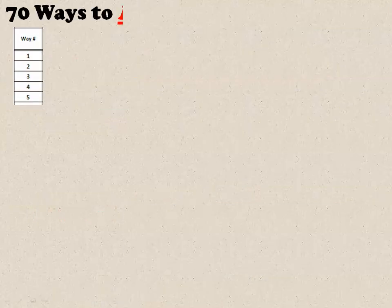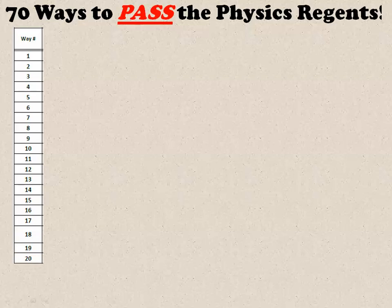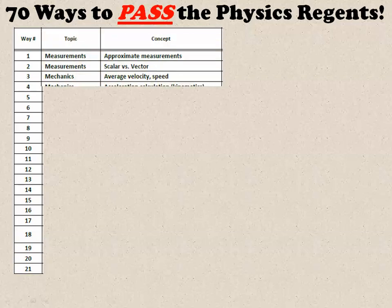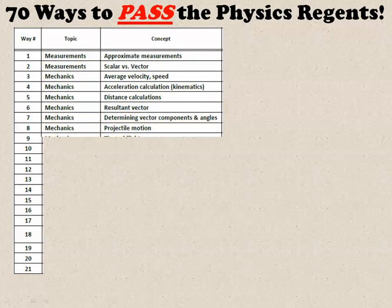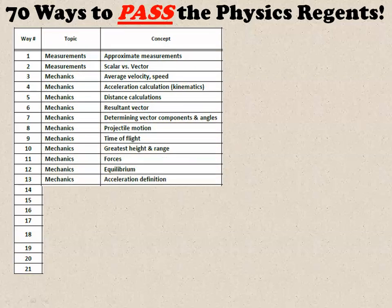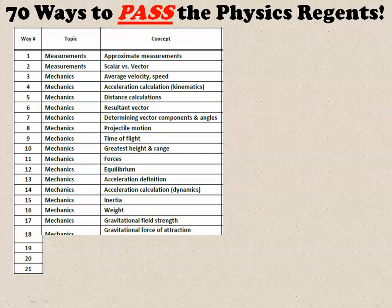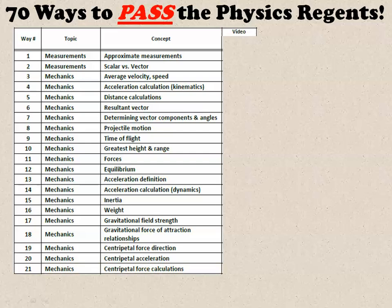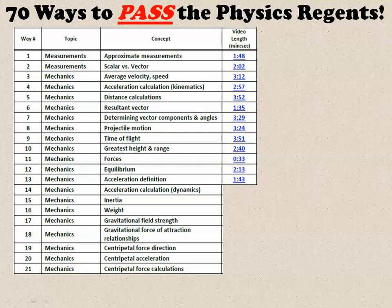The end result was 70 Ways to Pass the Physics Regents — organized and arranged in a topic-by-topic format. Each of the 70 concepts comes with its own video, with every video lasting less than four minutes.